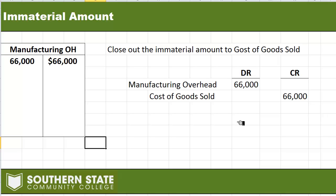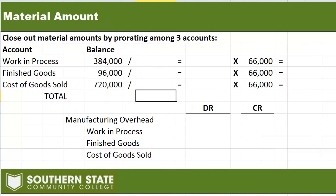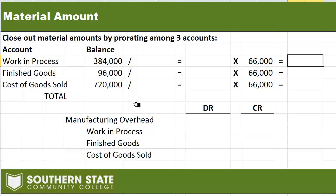Now let's talk about how to close out a material amount. It's not too hard, but we have another hoop or two to jump through. What we're going to do is prorate that over-applied overhead to three different accounts instead of just closing it all to cost of goods sold. We'll close it out to work in process, finished goods, and cost of goods sold. To determine what amounts go to which account, we find the total of the three accounts, then divide each individual one by that total to get a prorated percentage, and multiply that by our over-applied overhead to get the amount for the journal entry.